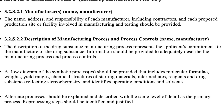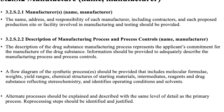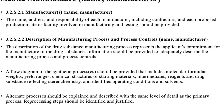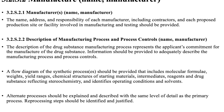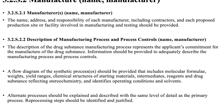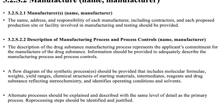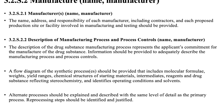3.2.S.2 Manufacturer (Name, Manufacturer): 3.2.S.2.1 Manufacturer — the name, address, and responsibility of each manufacturer, including contractors, and each proposed production site or facility involved in manufacturing and testing should be provided.